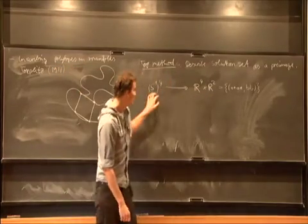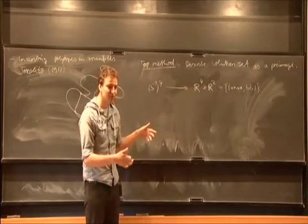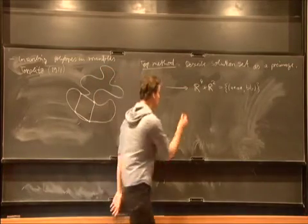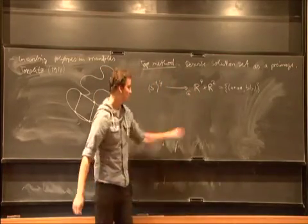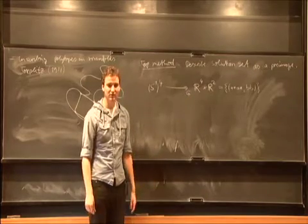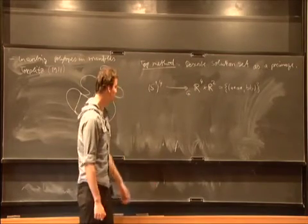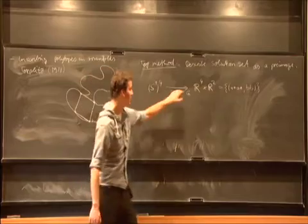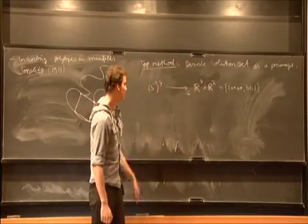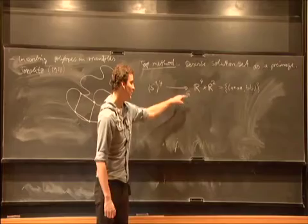And so the pre-image can now be measured topologically. So here's a group acting on it, G. It's a symmetry group of the square. It's acting here, and in a similar way it's acting on this space. So it's a G-equivariant map.